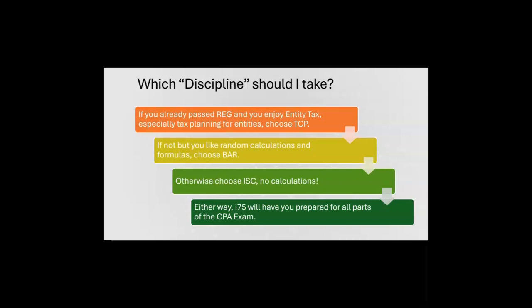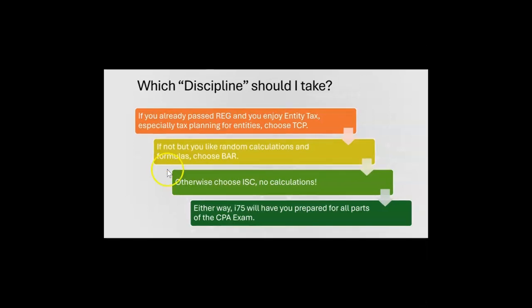especially tax planning for entities, choose TCP. If not, but you already passed FAR and you like random calculations and formulas, then choose BAR — Business Analysis and Reporting. Otherwise, choose ISC — Information Systems and Controls — no calculations at all.